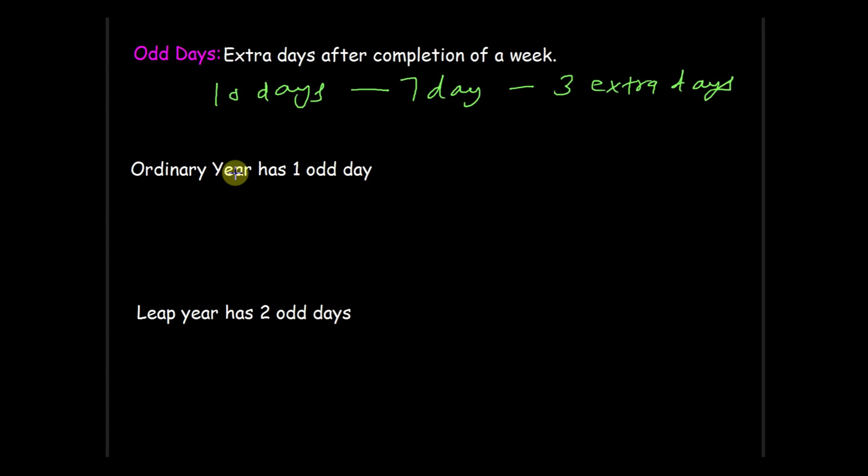Now we see some concepts related to odd days which we need to remember. First is ordinary year has one odd day. But question is how? See, we know ordinary year has 365 days and a week has seven days. So if we divide 365 by seven we'll get the remainder one and this remainder is odd day because it's an extra day.